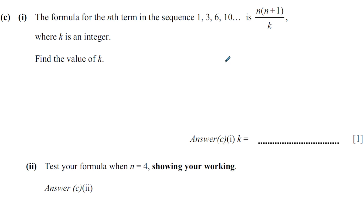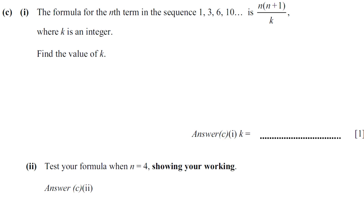Now we have the terms of the sequence. The first term is 1, the second term is 3, the third term is 6, the fourth term is 10. This is the sequence here, and that's its position. The formula for the nth term is given by this formula.